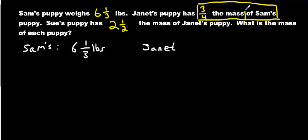Janet's puppy has 3 fourths the mass of Sam's puppy. What does the word of mean? If it's surrounded by two numbers, of means what? Yes, it means times. So, do we know Sam's puppy? Of course we do. It's right there. And we have a number on each side of of. We'll just times them. Don't sweat this stuff. Just go ahead and multiply these. Times 3 fourths.